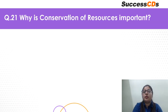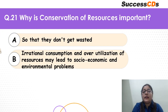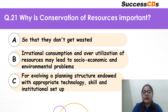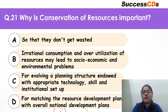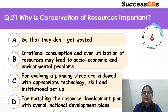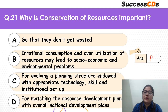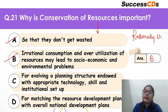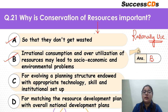Coming to question 21: why is conservation of resources important? So that they don't get wasted? Because irrational consumption and over-utilization may lead to socio-economic and environmental problems? For evolving a planning structure? Or for matching resource development with national developmental plans? Option A is also correct, but the most appropriate option is B. If you don't conserve, you don't use resources rationally, leading to environmental issues and socio-economic problems — which are in fact happening.